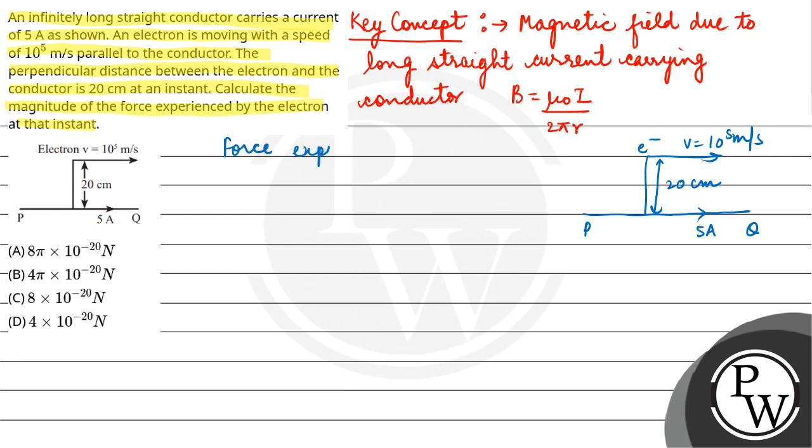Force experienced F is equal to Q V cross B. Watch out here, velocity vector in this direction and magnetic field outward. We can say that magnetic field and velocity vector are perpendicular in this direction, so Q V B sin 90.